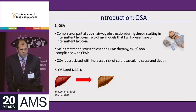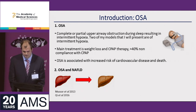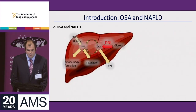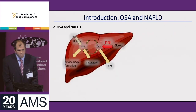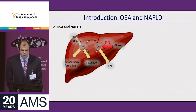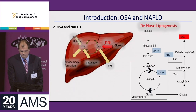We know from large meta-analyses that the presence and severity of OSA goes hand-in-hand with the presence and severity of non-alcoholic fatty liver disease. Even lean people with obstructive sleep apnea have a significantly increased risk of non-alcoholic fatty liver disease. The process by which lipid accumulates within the liver occurs via multiple pathways, but for simplicity and time I'm just going to talk about de novo lipogenesis.